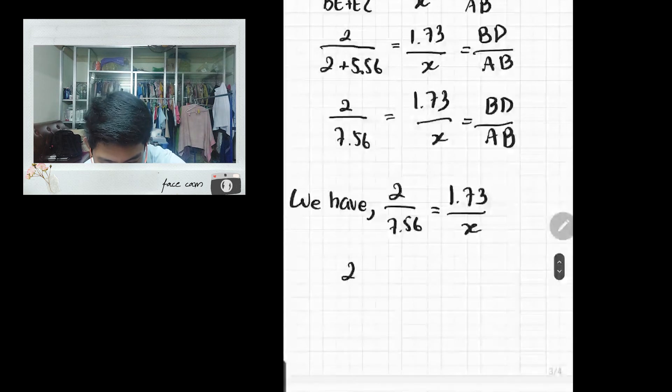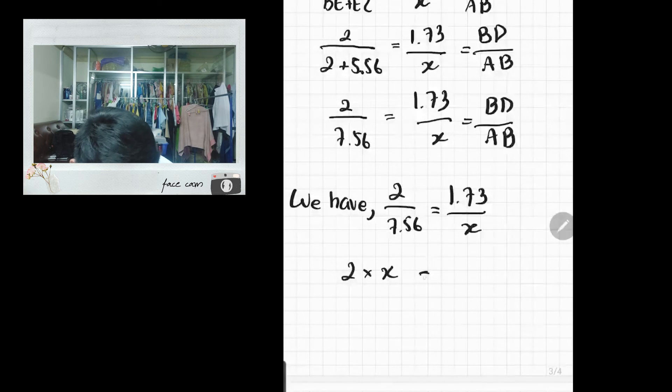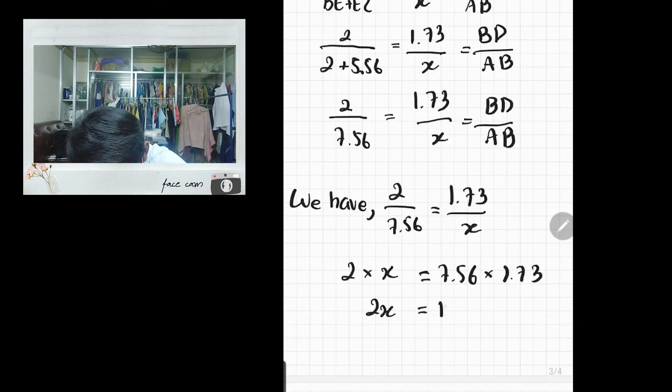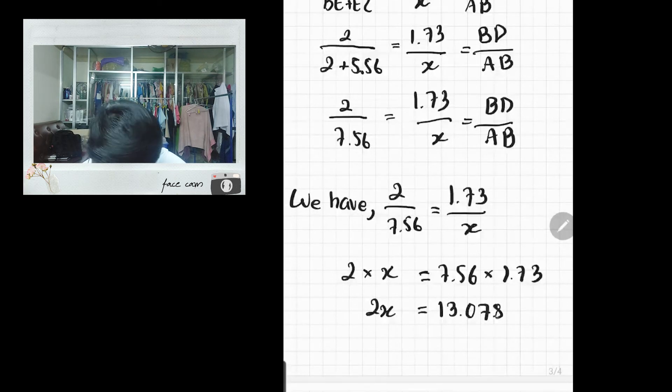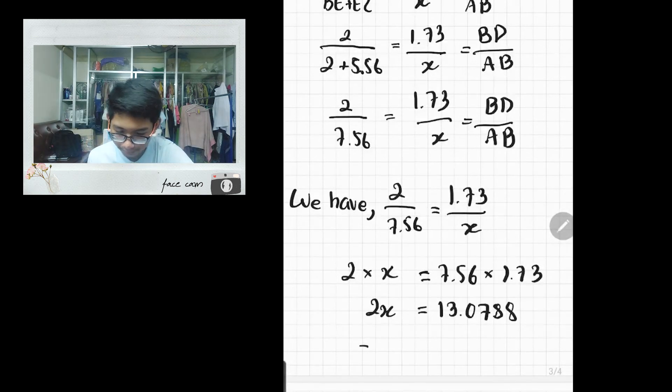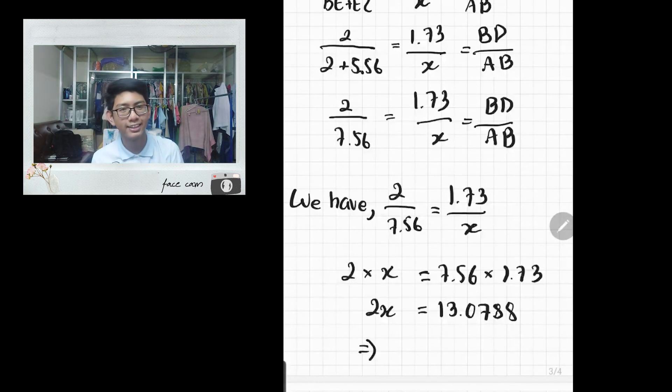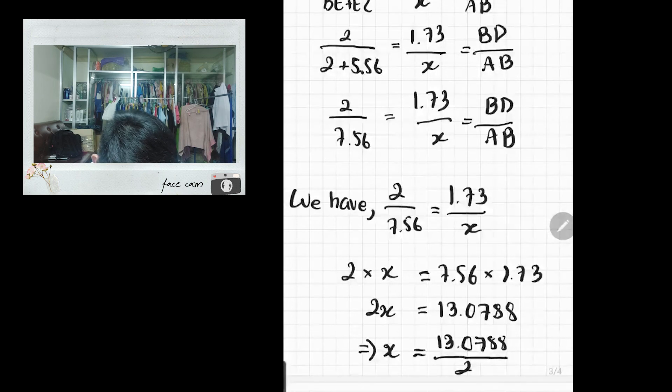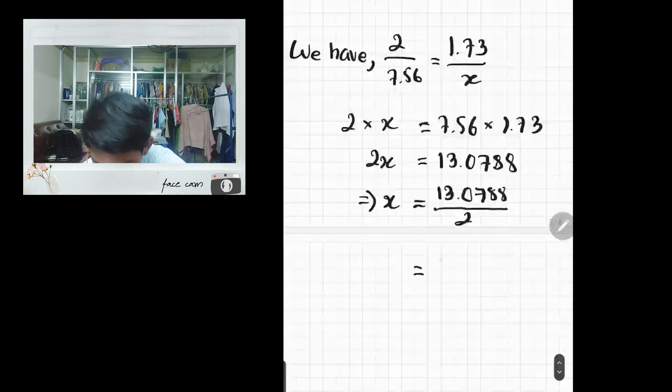In order to get x, we're going to use the cross multiplication method. The numerator 2 will cross multiply with the denominator x, and the denominator 7.56 would multiply with the numerator 1.73. Now it's time to isolate the x. Since 2 is multiplied by x, we need to move 2 to the other side, so it will become division.